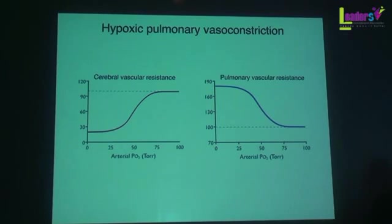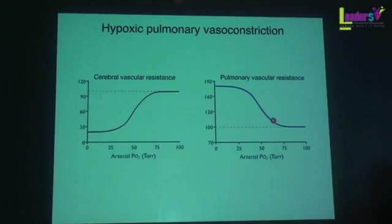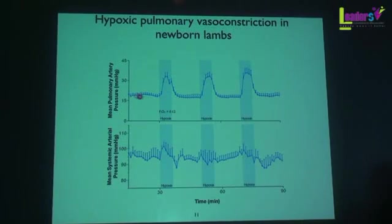We were thinking a lot about pulmonary hypertension and had a newborn lamb model of the condition. Unlike the brain, which responds to hypoxia by vasodilating, the lung is the opposite — it responds to hypoxia by vasoconstricting. We can take newborn lambs, put in a Swan-Ganz catheter into the pulmonary artery and a flow probe around it, and turn down the FiO2. When we do that, we get a nice, reproducible, consistent pulmonary hypertension. Each of these bars shows what happens to pulmonary artery pressure when we decrease the FiO2, and we can sustain that level for 30 to 40 minutes.